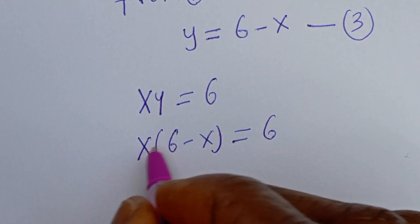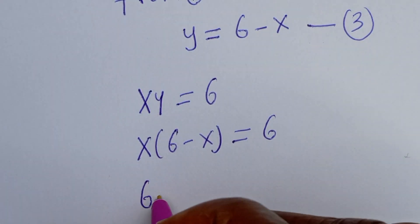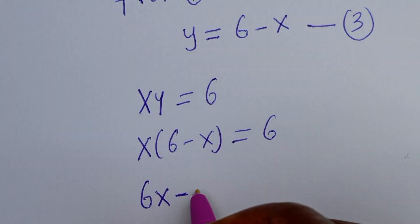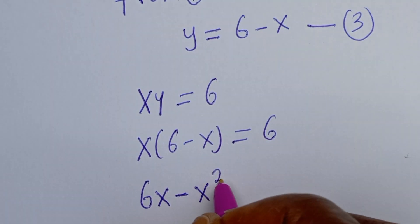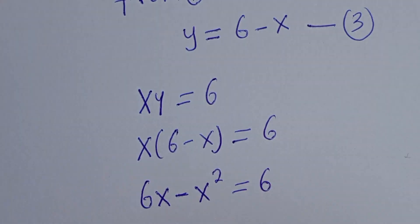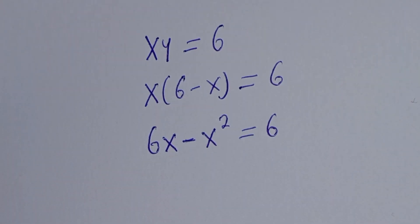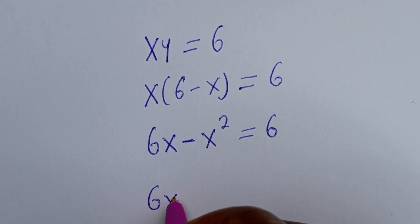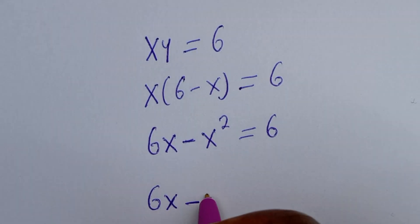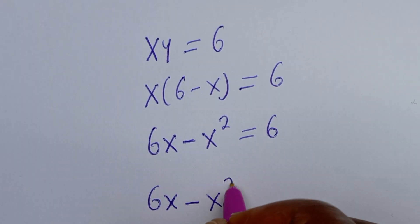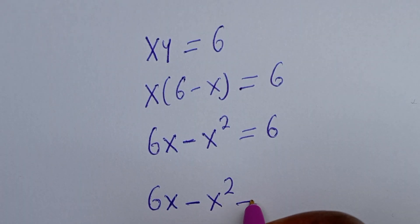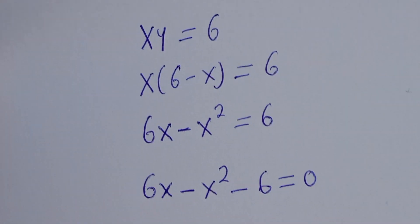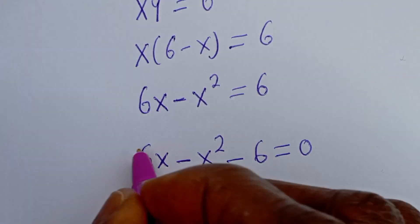Let's open the bracket: s times 6 is 6s, minus s times s is s squared, is equal to 6. So we have 6s minus s squared minus 6 is equal to 0.